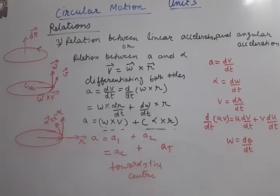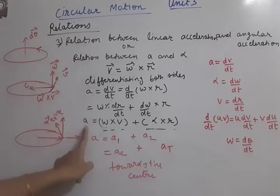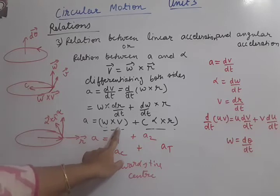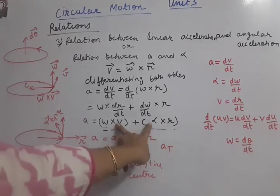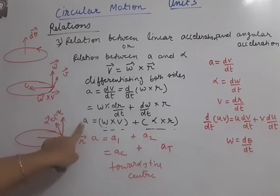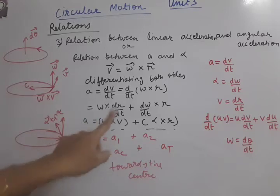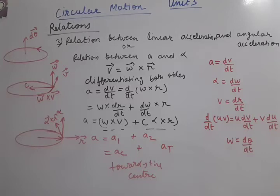So finally we have the relation: a = (ω × v) + (α × r), where ω × v is the centripetal acceleration directed towards the center, and α × r is the tangential acceleration directed along the tangent. These two accelerations together give the total acceleration for any circular motion. Now we will understand a special case where one of these accelerations vanishes - that is uniform circular motion.